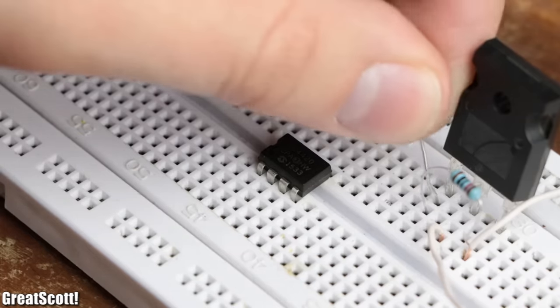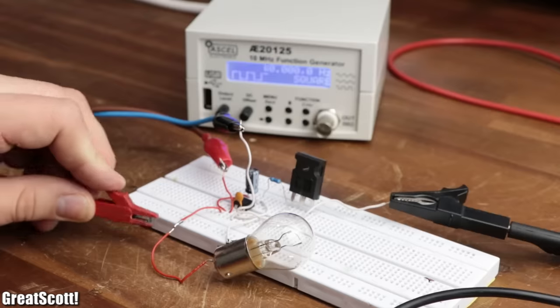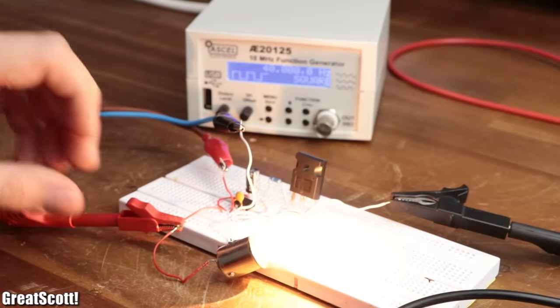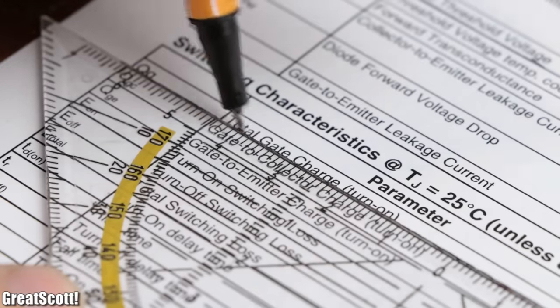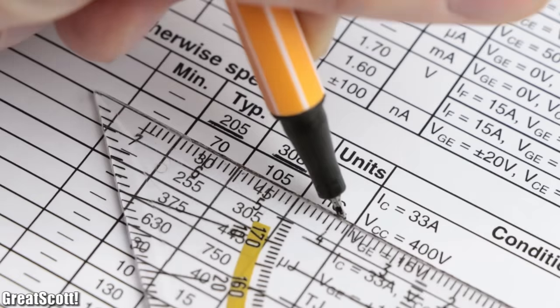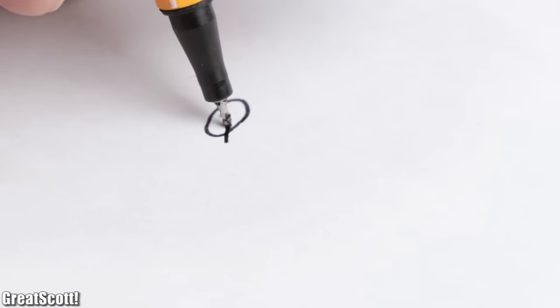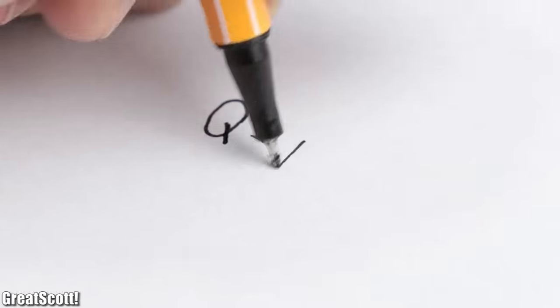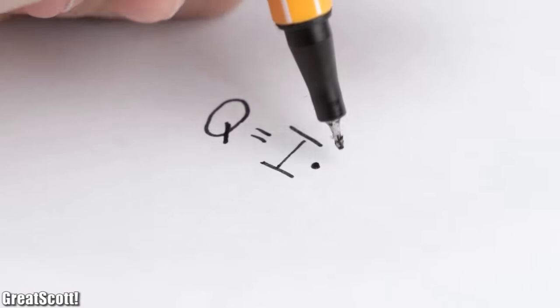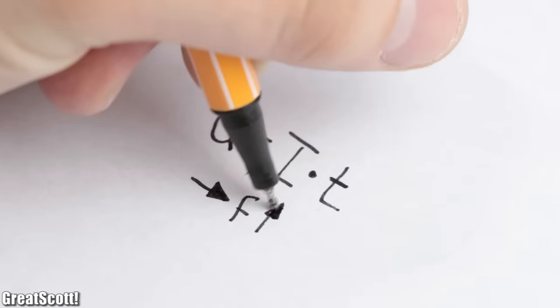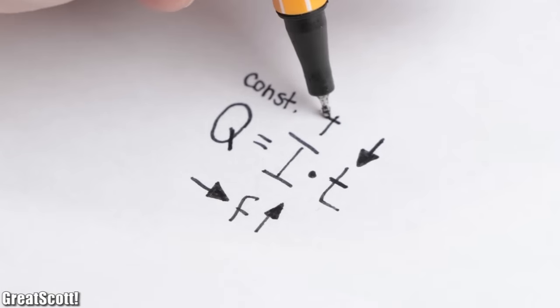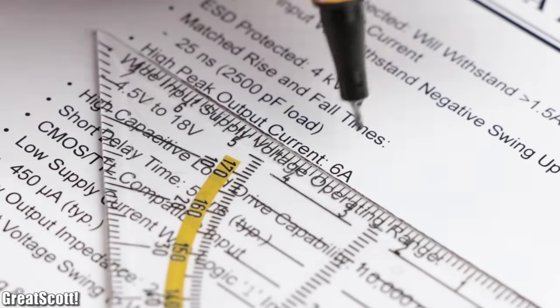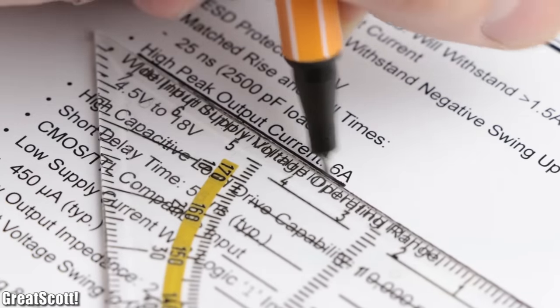Now all the IC basically does is connecting the gate either to the supply voltage or ground, to charge it up or discharge it. This is important since we need a specific gate charge to turn the IGBT on and thus we must consider that the charge Q equals current I multiplied by the time T. With higher frequencies T becomes smaller but Q is still constant, which means we have to increase the gate current. And the driver IC with its 6A current capability can usually handle this job.